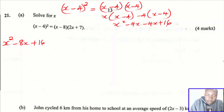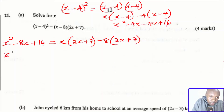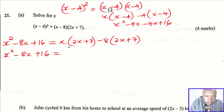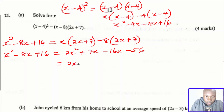The right hand side of the equation: expand 8(2x + 7) as 8 multiplied by 2x plus 7, then subtract. This gives x squared minus 8x plus 16 equals 2x squared plus 7x subtract 16x minus 56. Simplifying the right hand side: 2x squared, and 7x minus 16x gives negative 9x, subtract 56.